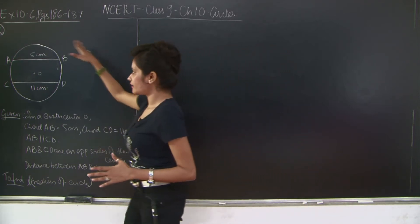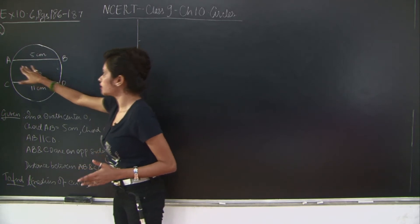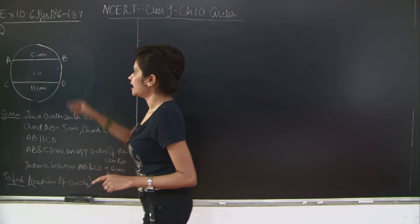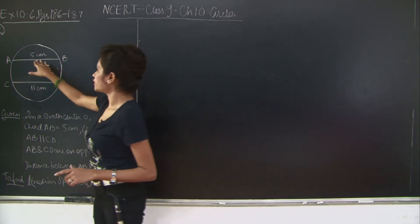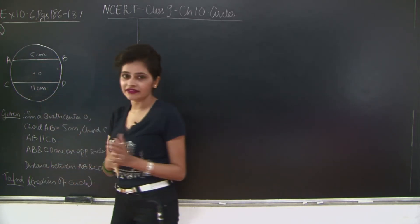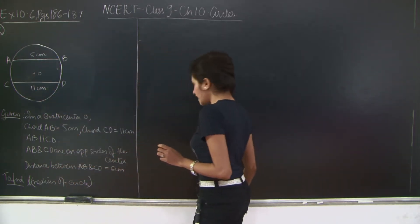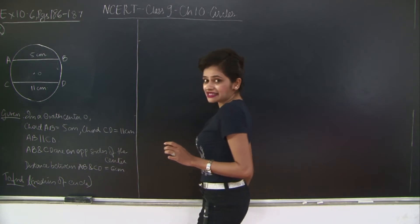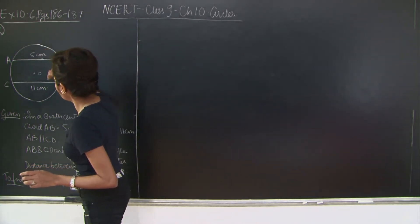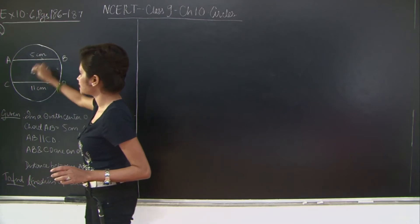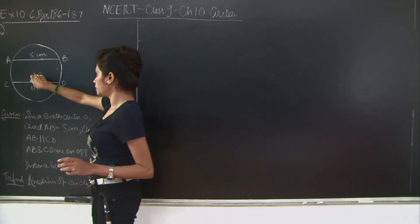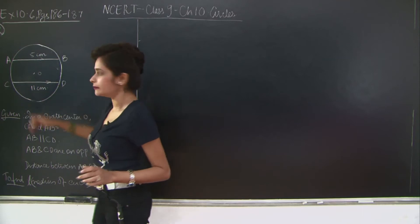Here I have a circle with centre O and chords AB and CD. The length of chord AB is 5cm whereas that of CD is 11cm. AB and CD are parallel to each other and they are on the opposite sides of the centre, so the centre is in between chord AB and CD.